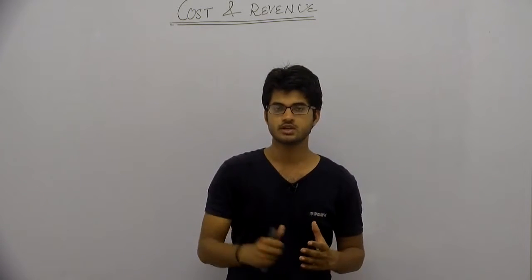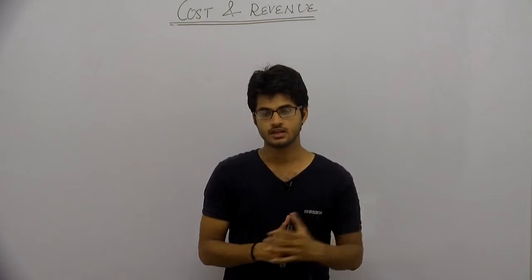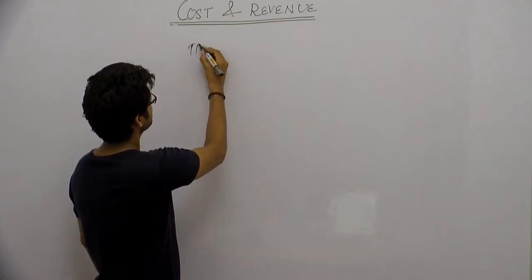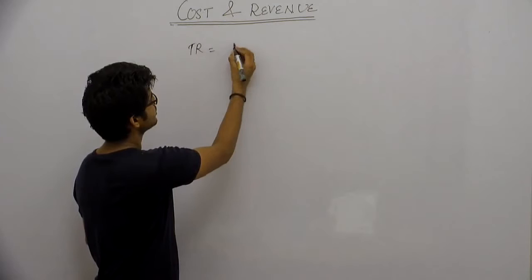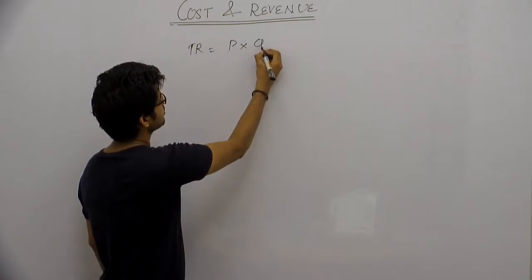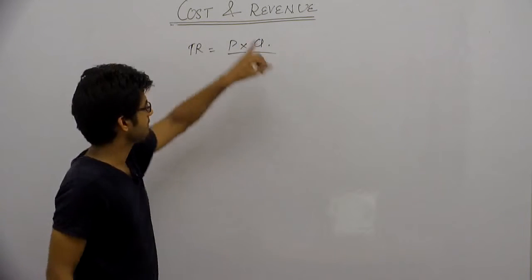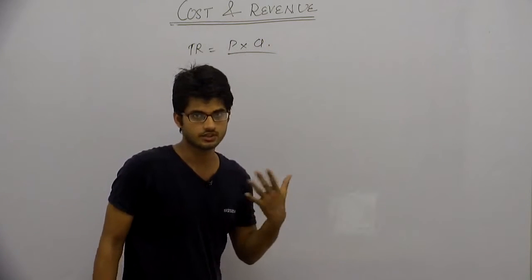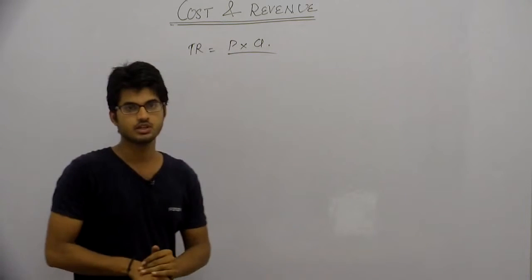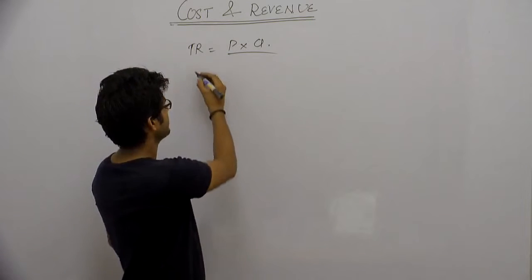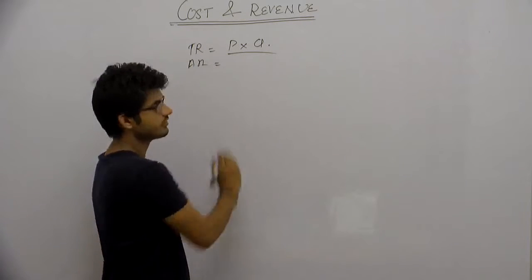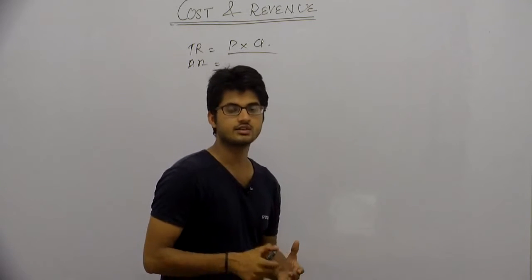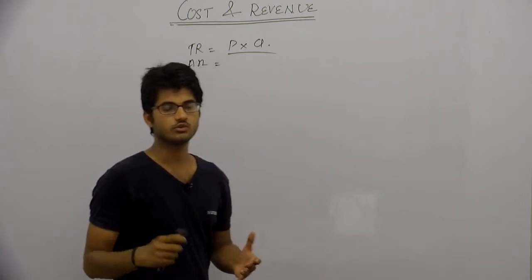Total revenue is the amount a producer gets from selling any quantity at a particular price. Total revenue is equal to price into quantity sold. Suppose the price of the product is rupees 10 and quantity sold is 5, then the total revenue will be 50.